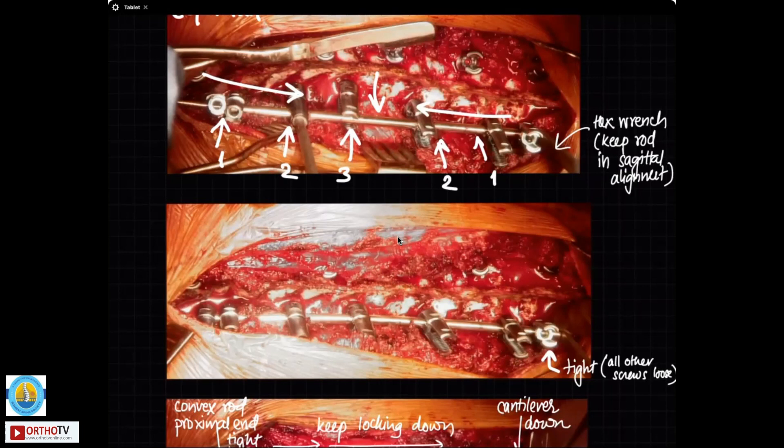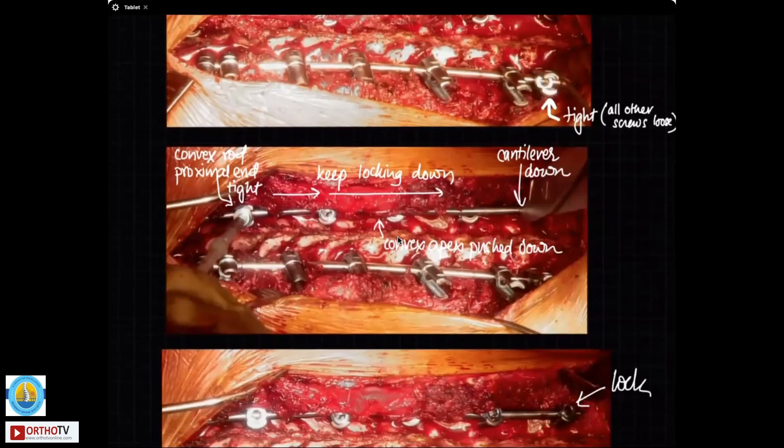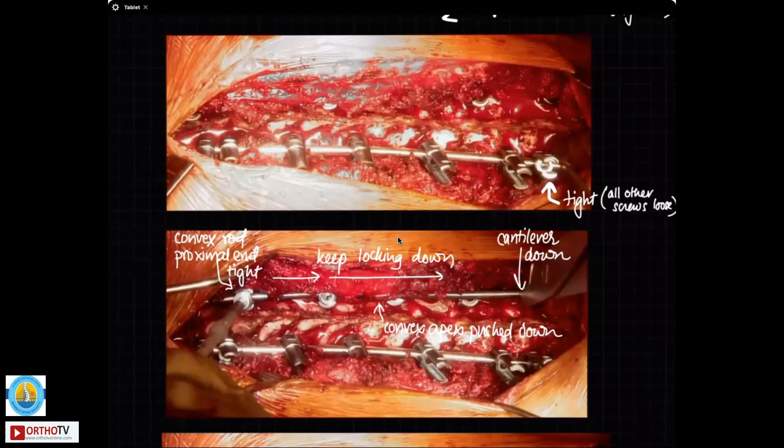Here you will see now at this point in time, this screw is tightened. All these screws are loose. So you don't want to tighten them except for this. So you want to keep this tightened so that this rod does not change its rotation. Keeping this locked, this rod will maintain its rotation. Only thing that these nuts are kept loose. Now, you want to keep these loose because you are going to use the convex rod to push down on the apex on the other side. And you won't be able to do that. You won't be able to derotate the vertebra if you have locked this whole assembly on this side. So only lock the lower one and keep the rest of it loose.